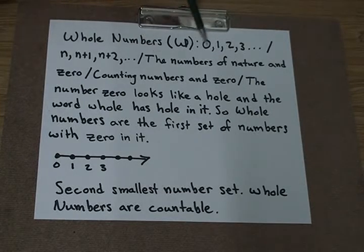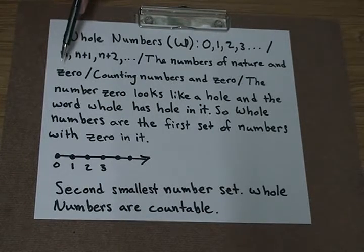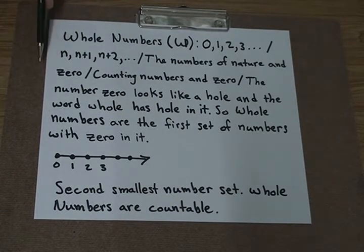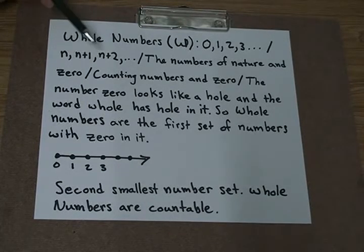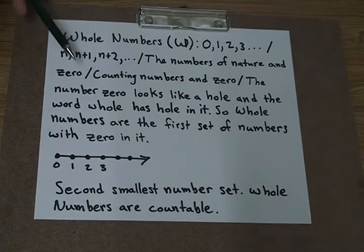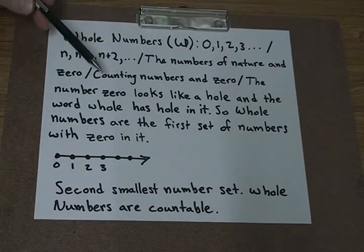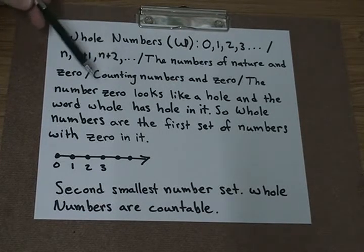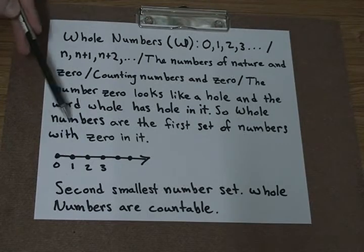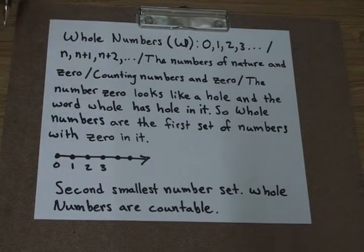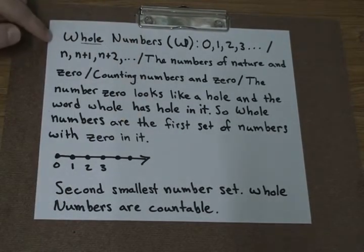These are also the numbers of nature, but we're including the number 0 now. So it's exactly like the natural numbers, except for whole numbers have the 0. So the mathematical definition would be counting numbers and 0. Well, to help you remember whole numbers, just remember the number 0. The number 0 looks like a hole, and the word whole has hole in it. So whole numbers are the first set of numbers with 0 in it.